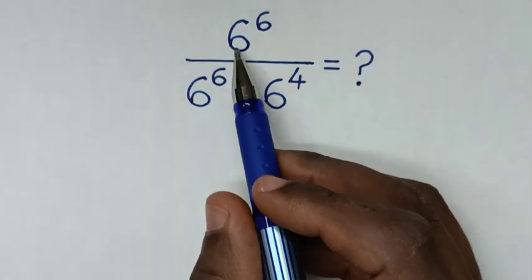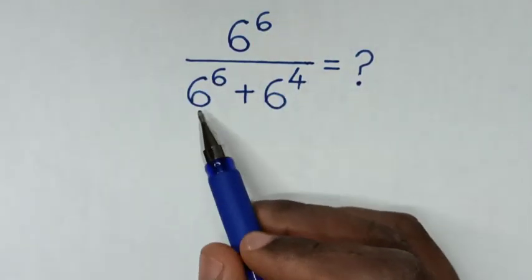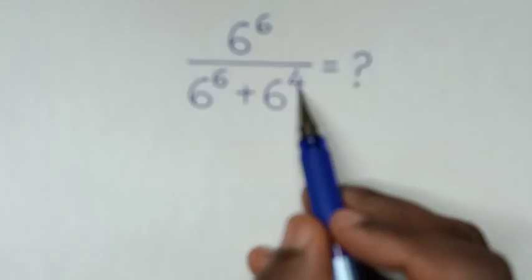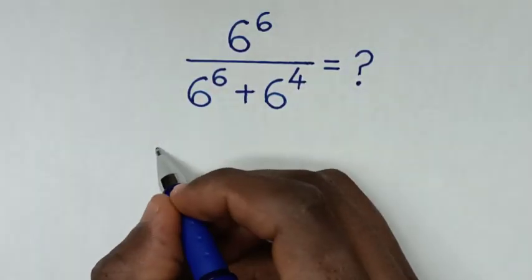Hello, we'll work out 6 power 6 over 6 power 6 plus 6 power 4, so it will be equal to: